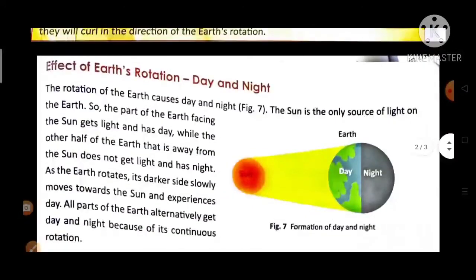Next page, open karehi. Effect of Earth's Rotation: Day and Night. The rotation of the Earth causes day and night. The Sun is the only source of light on the Earth.